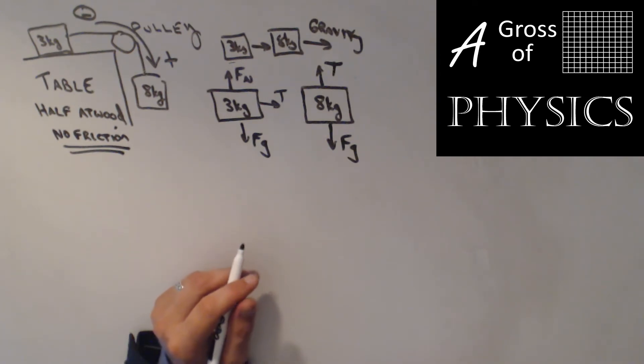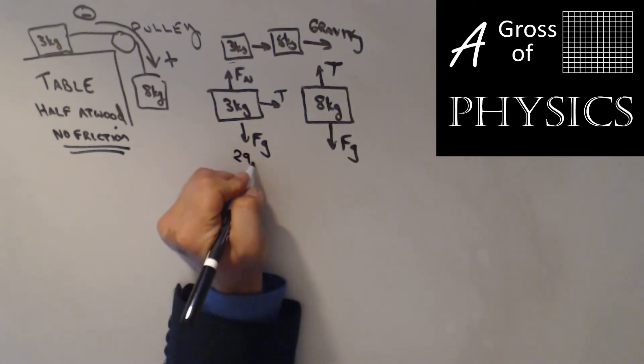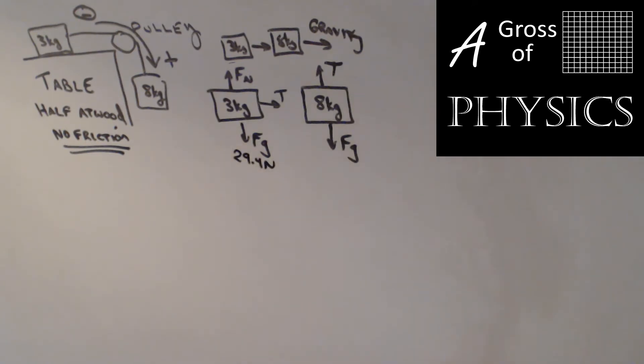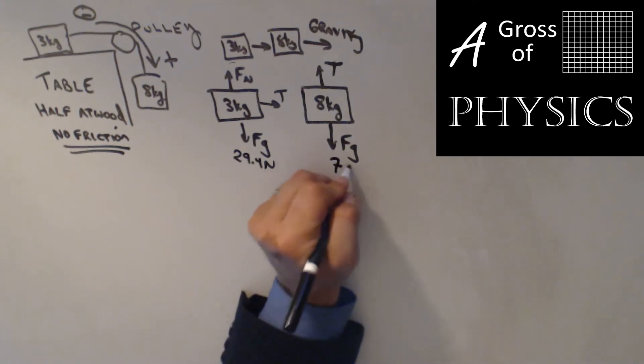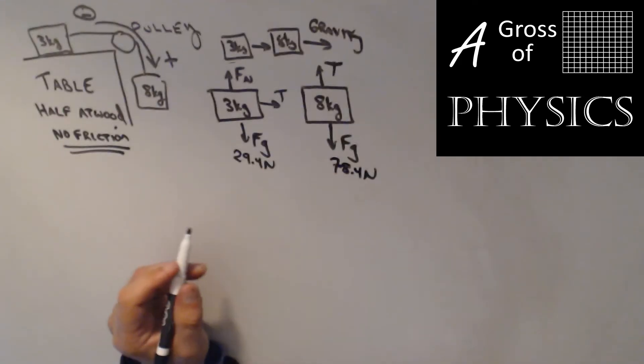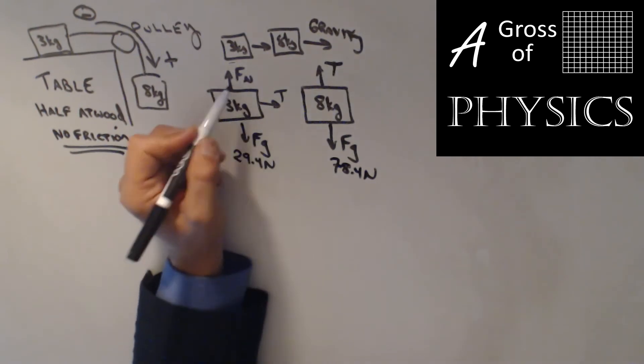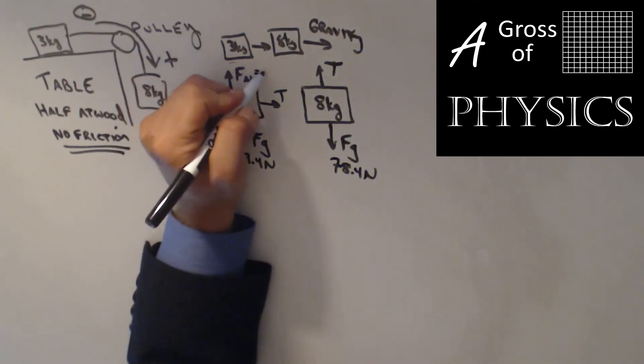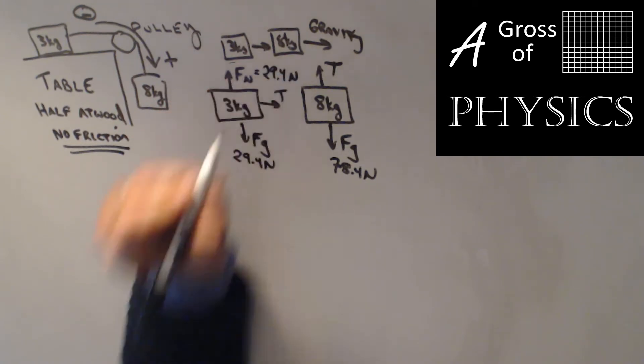We need to determine the force of gravity for each. 3 times 9.8 is 29.4 N here, and 8 times 9.8 is 78.4 N. Since the normal force is equal and opposite to gravity on the 3 kg block, the normal force is 29.4 N as well.